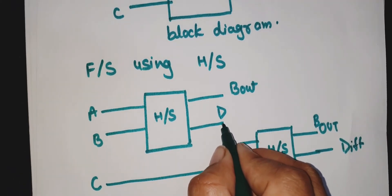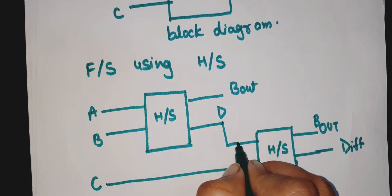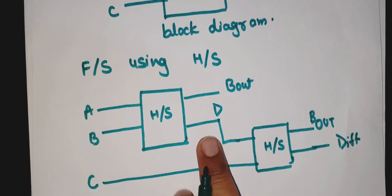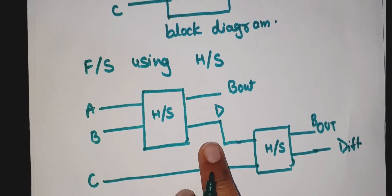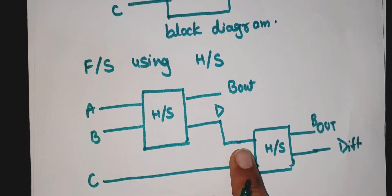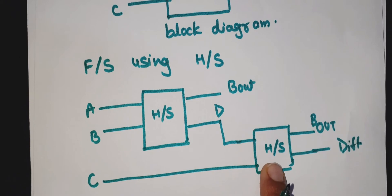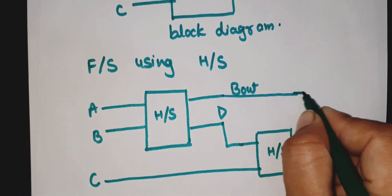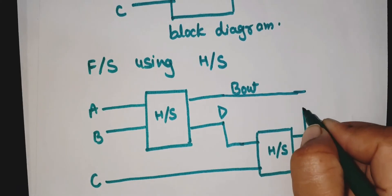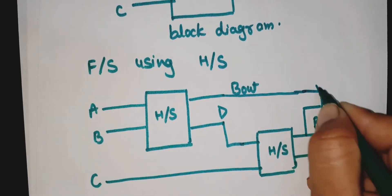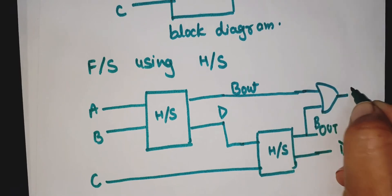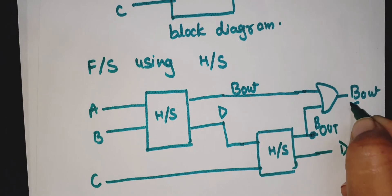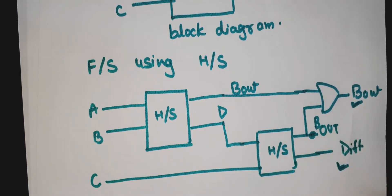The output of difference of the first half subtractor works as the first input for the second half subtractor. C is the external input as the second input to the second half subtractor. The two borrow outputs will be OR-ed together to get the final B_out. This is the final B_out and this is the final difference.